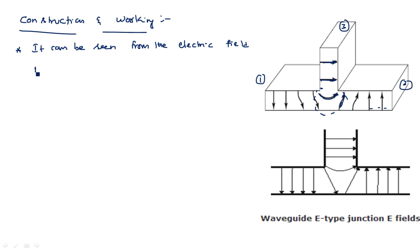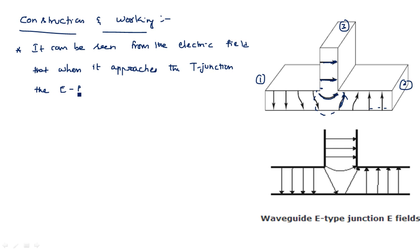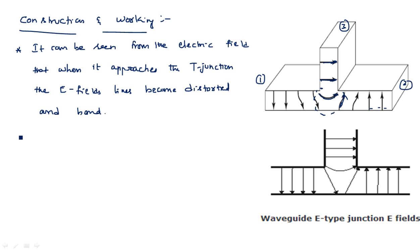It can be seen from the electric field that when the signal approaches the T-junction, the electric field lines become distorted and bend. By seeing these field lines itself we can understand that the electric field lines, after crossing this junction, are slowly converted — depending upon the input electric field lines, the output electric field lines are out of phase.